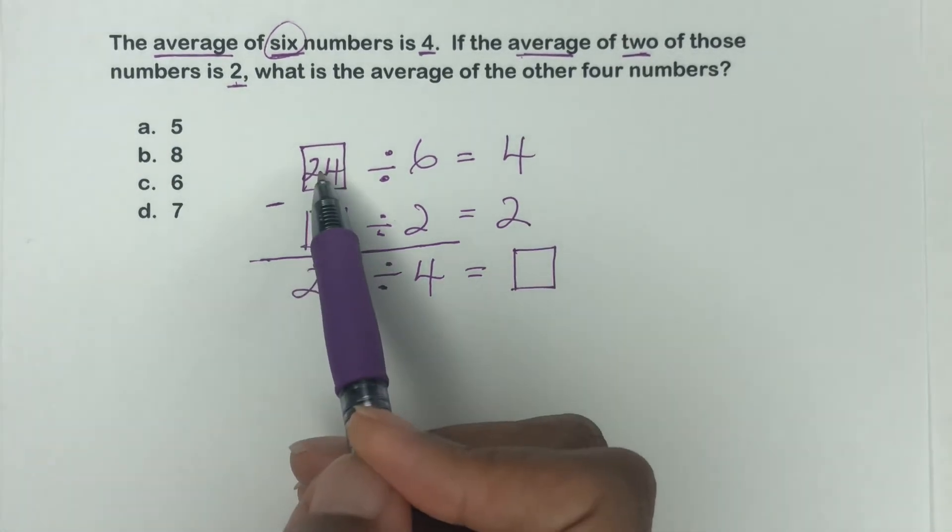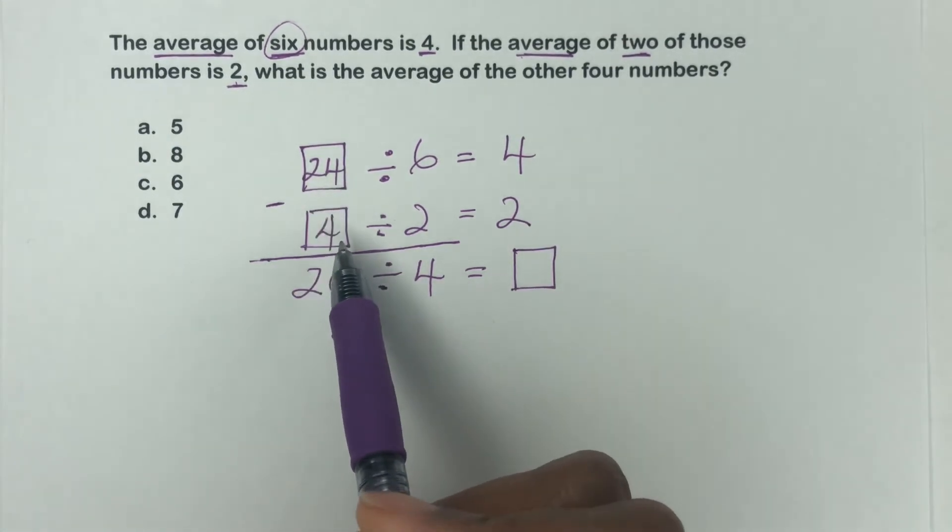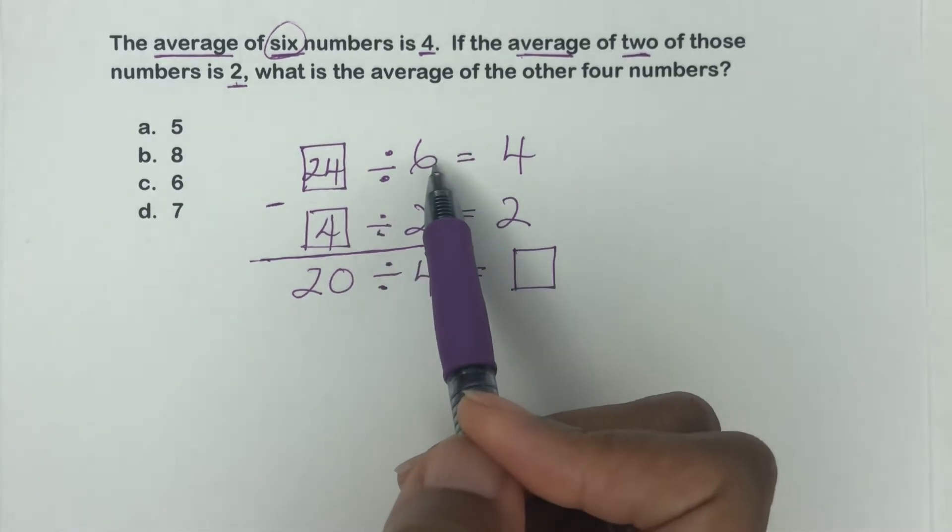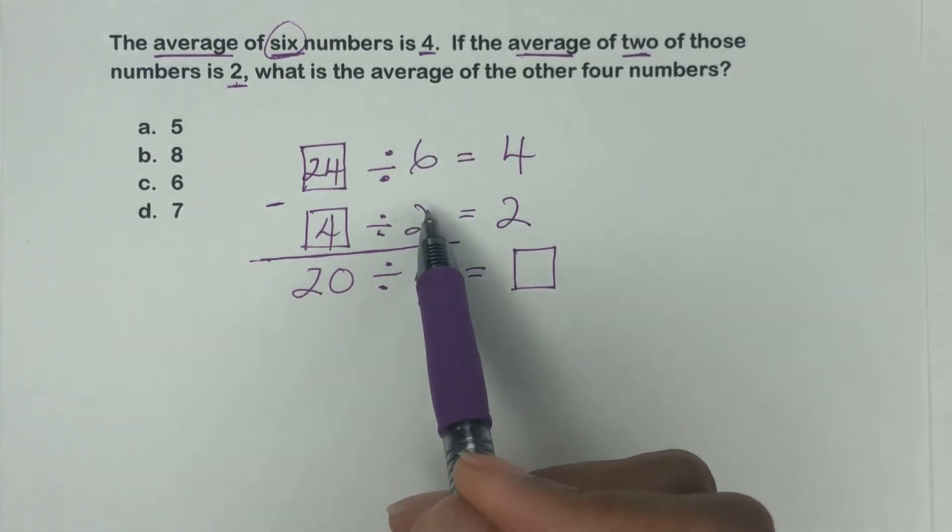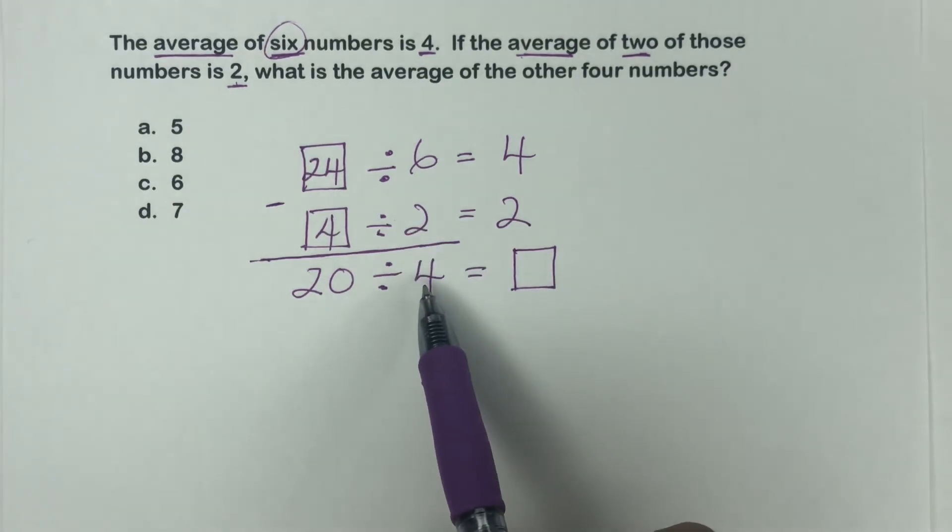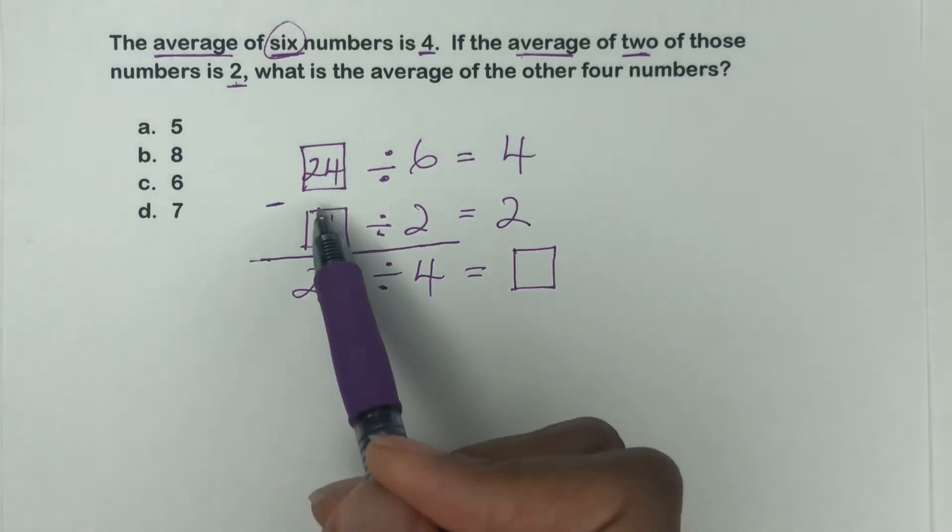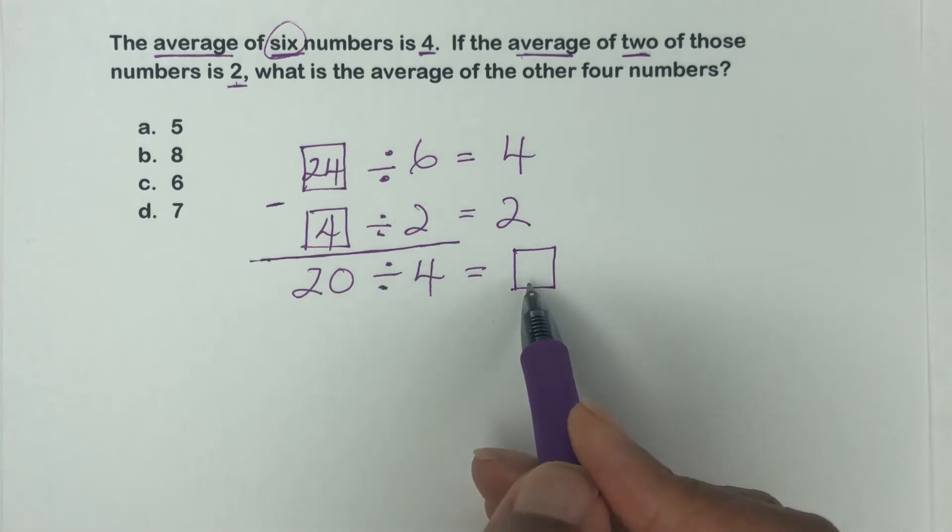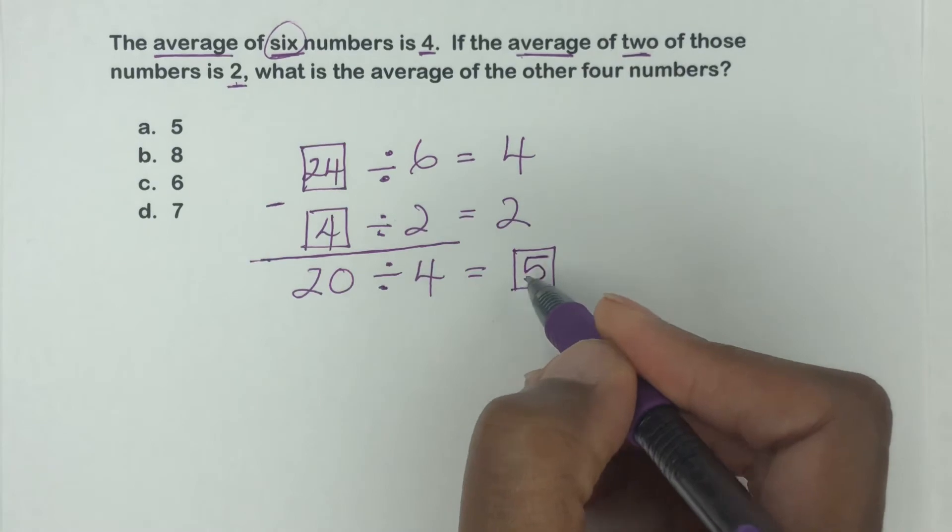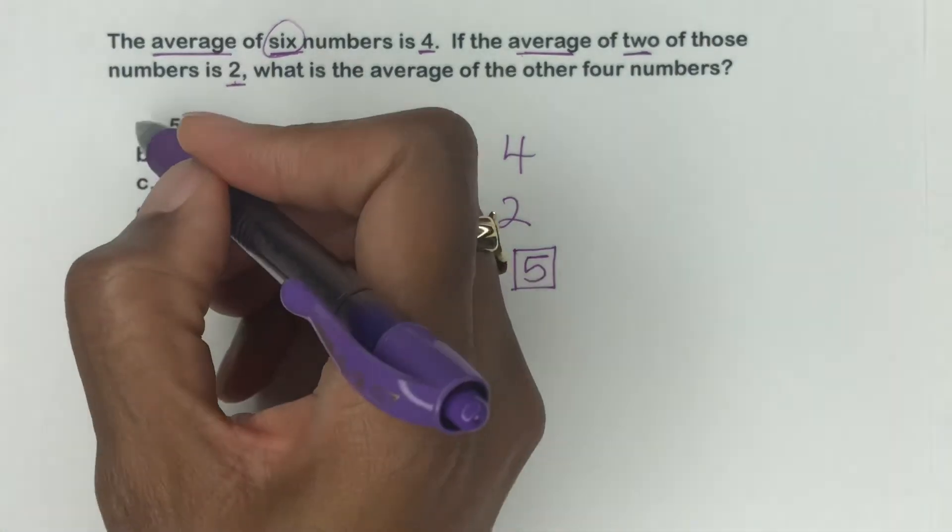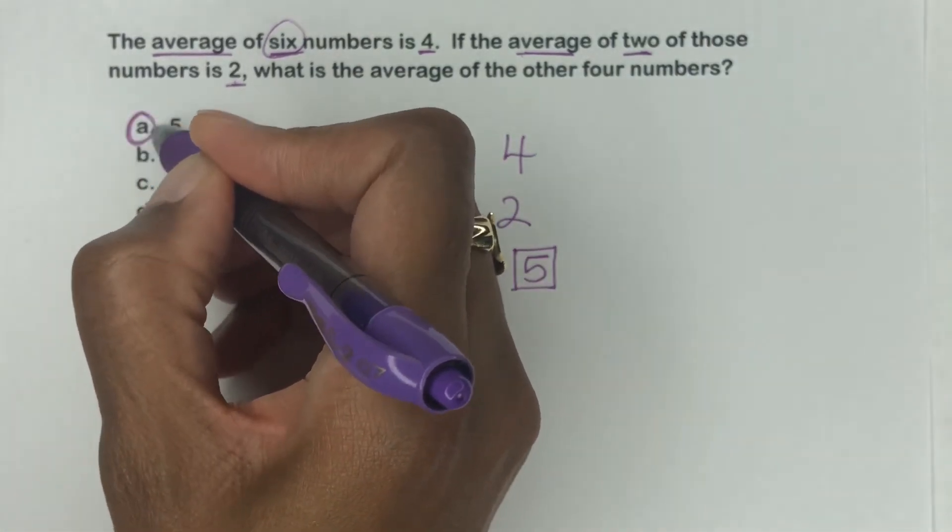then it's five because we whittled our way down to finding out what the average of the six numbers is. They told us that, and they told us the average of two is two. And then they want to know what's the average of the other four. So now we got our 20. So then this has to be what. What times four is 20? This has to be five. So our answer here, guys, is A.